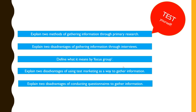Now this is where you need to test yourself. There are five questions: explain two methods of gathering information through primary research; explain two disadvantages of gathering information through interviews; define what is meant by focus group; explain two advantages of using test marketing as a way to gather information; and explain two disadvantages of conducting questionnaires. The purpose of this section is to assess your understanding of the various methods — the good and the bad — because exam questions will revolve around these areas.